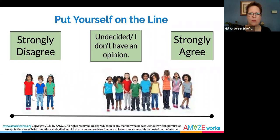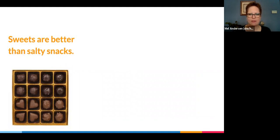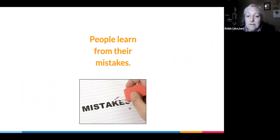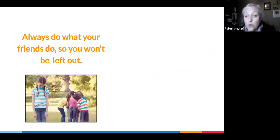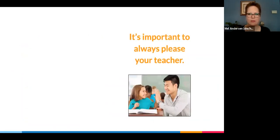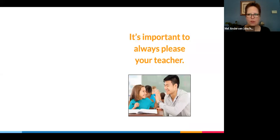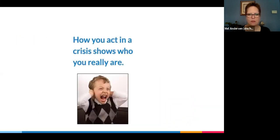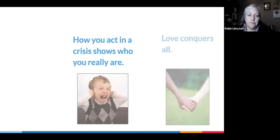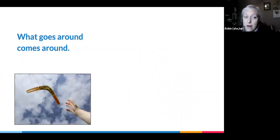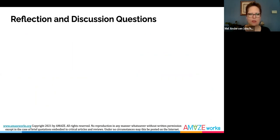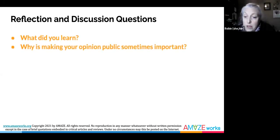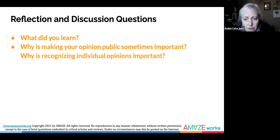Some examples of statements for younger students include: Sweets are better than salty snacks. People learn from their mistakes. One should never climb dangerous mountains. Always do what your friends do so you won't be left out. It's important to always please your teacher. Examples for older students include: Life is fair. How you act in a crisis shows who you really are. Love conquers all. What goes around comes around. Doing what's right means obeying the law. At the end of the activity, offer time for reflection and discussion. Reflection questions could include: What did you learn? Why is making your opinion public sometimes important? And why is recognizing individual opinions important?